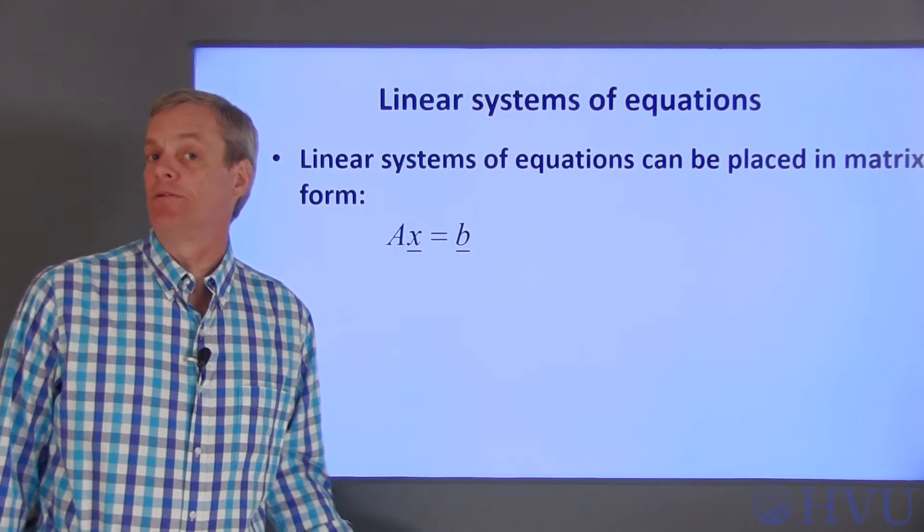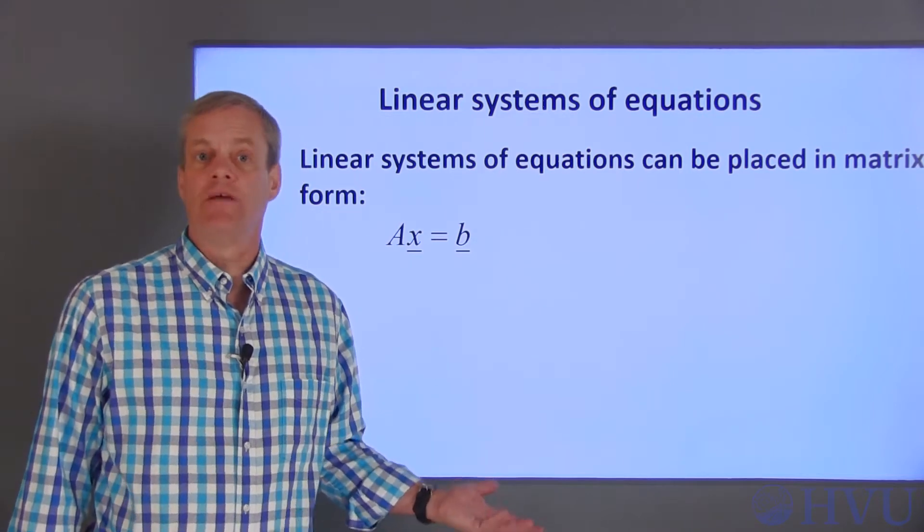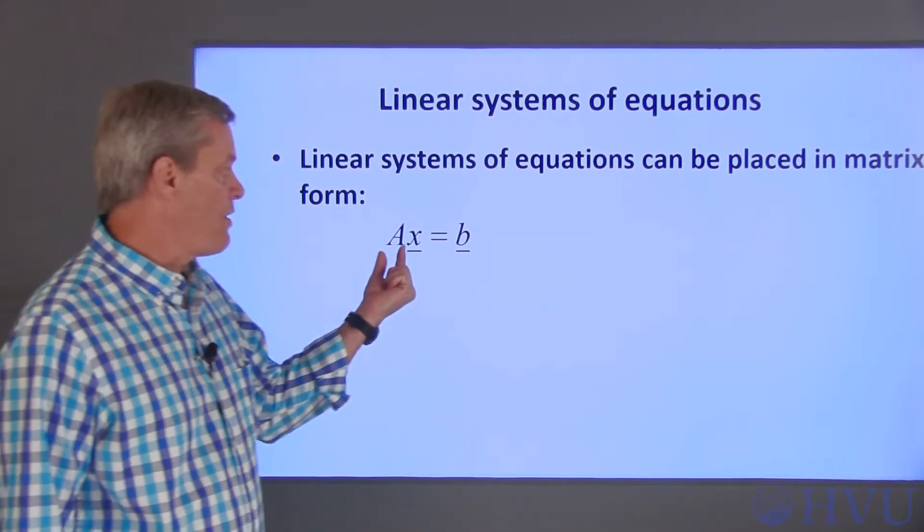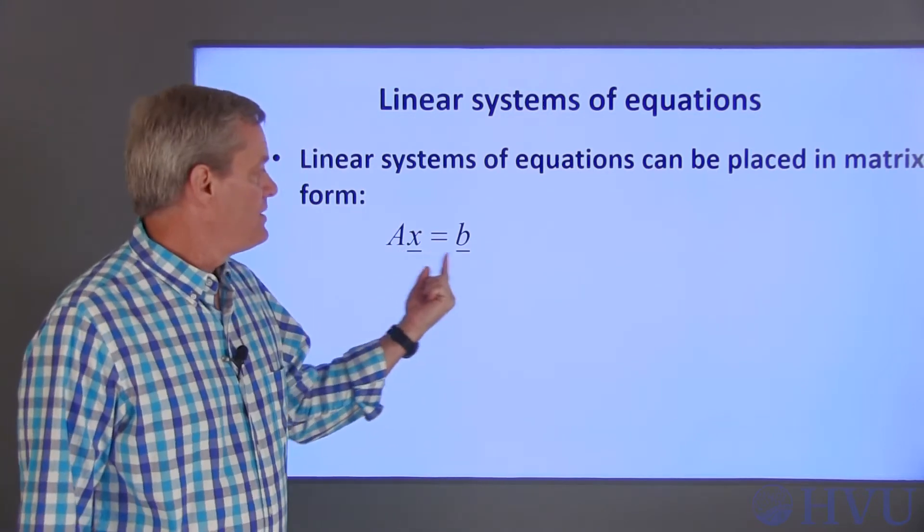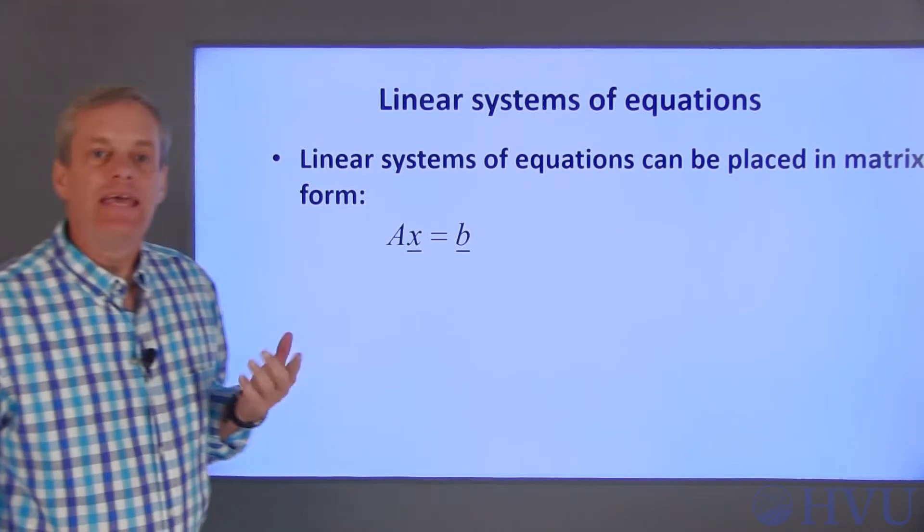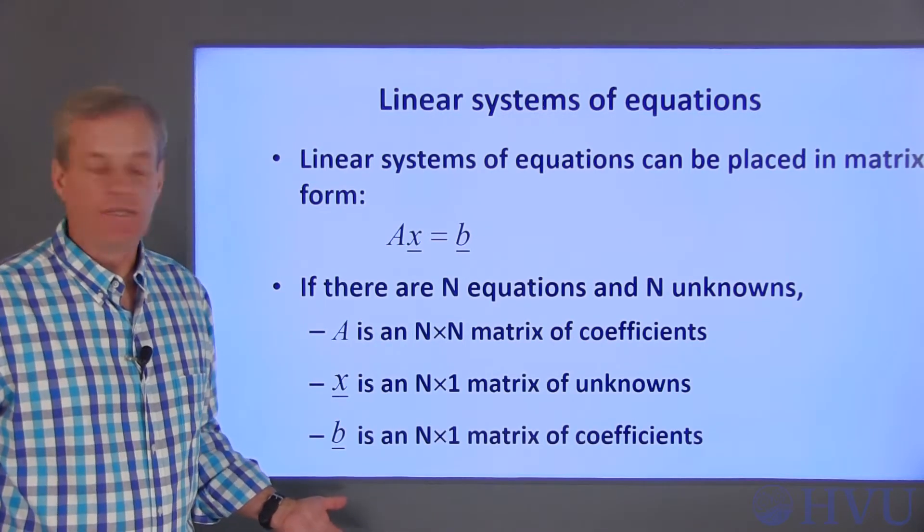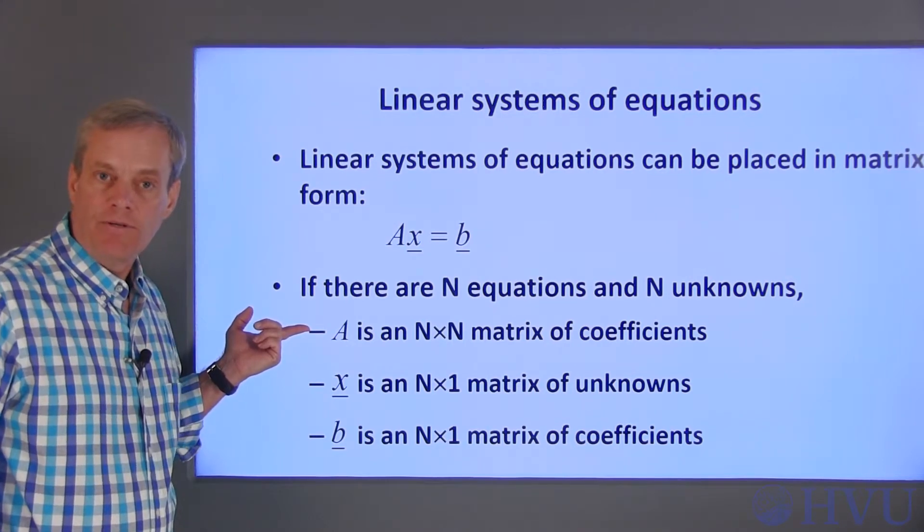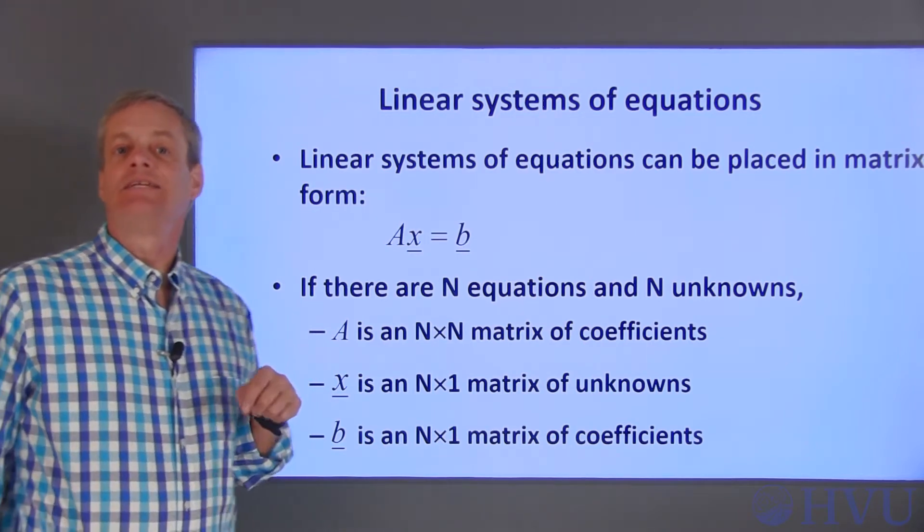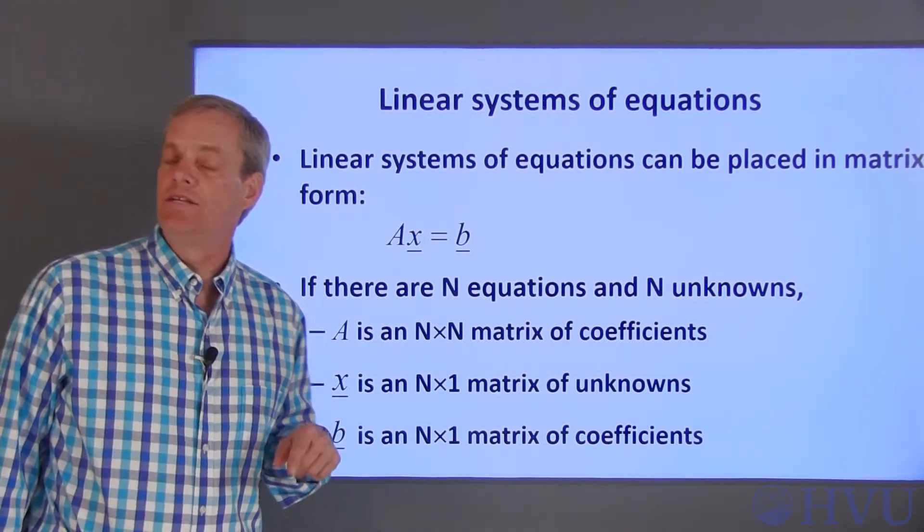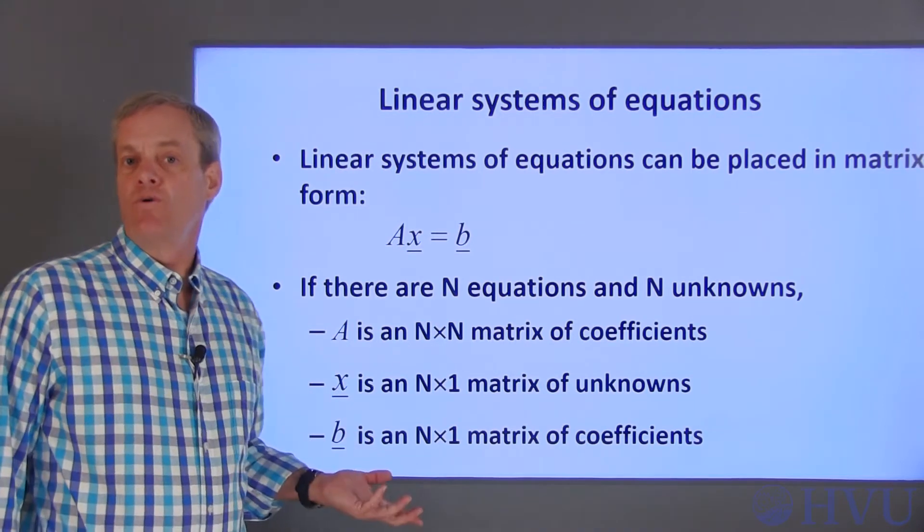Linear systems of equations can be placed in matrix form. If we have the same number of equations as unknowns, the matrix form of the equations is a square matrix A times a vector of unknowns X is equal to a vector B. If the system of equations has n unknowns and n equations, A will be an n by n matrix of numbers. X will be a column vector with n rows containing a list of the unknowns that we need to determine values for. B is also a column vector with n rows containing numbers.